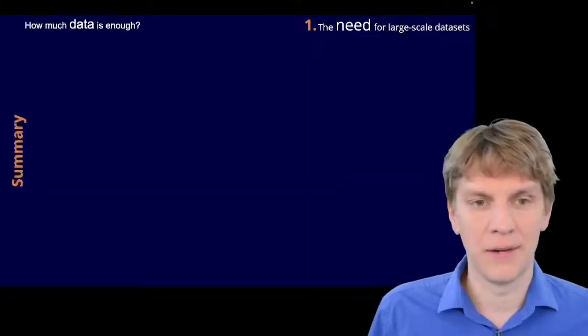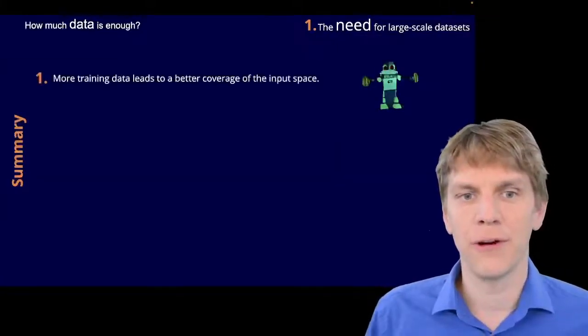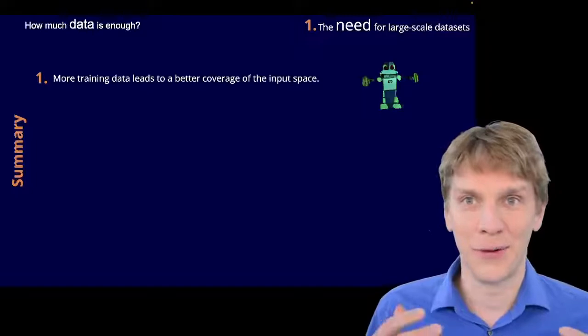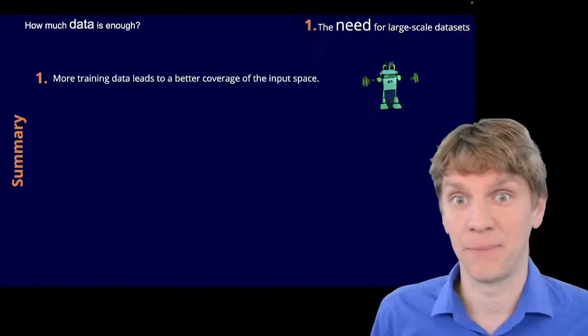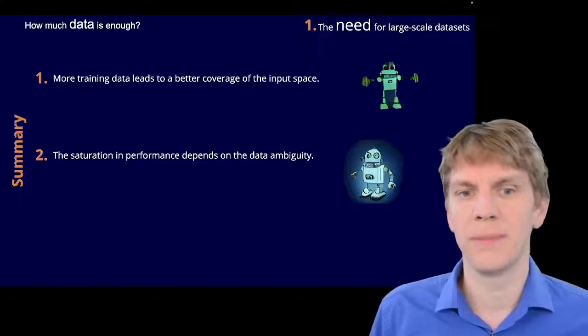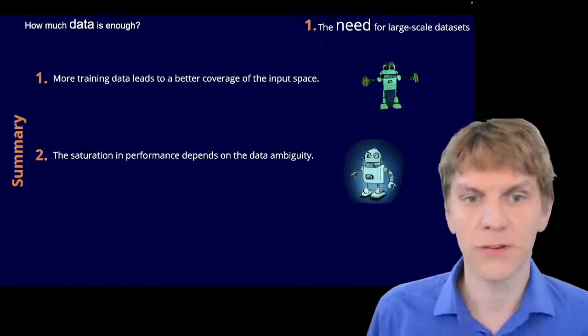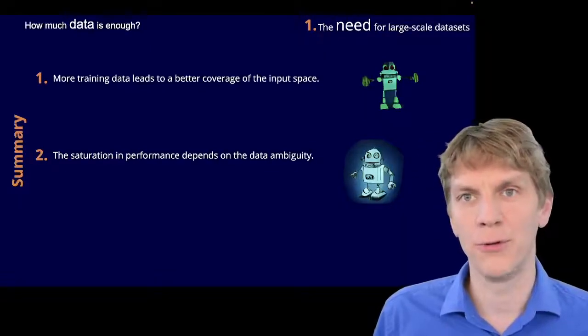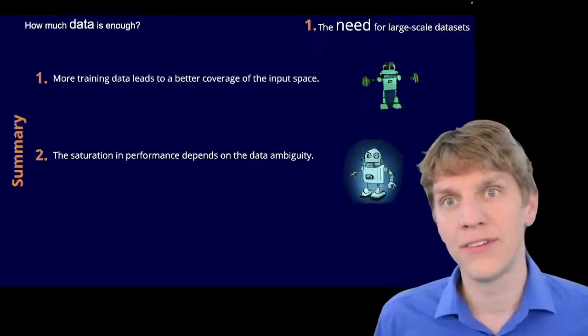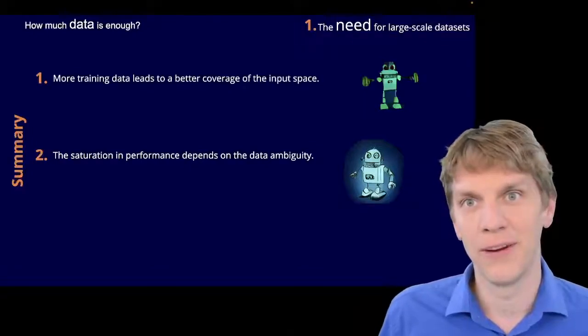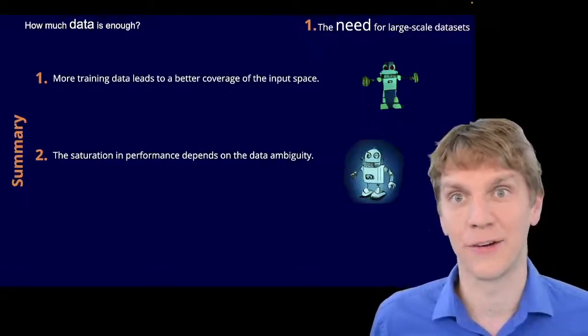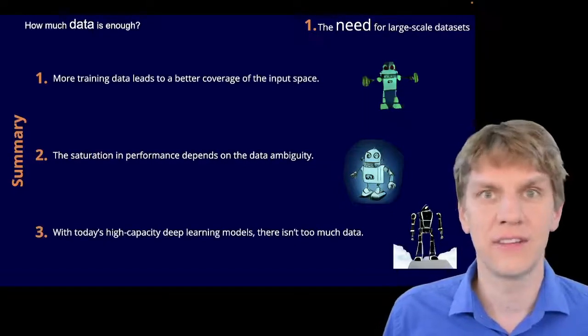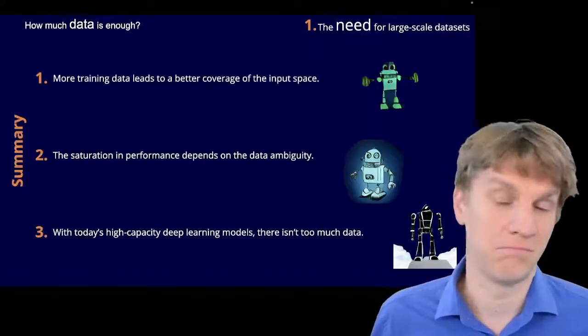All right, so let's summarize that briefly. So first of all, yes, more training data leads to better coverage of the input space, right? So we can then run better models on that. Secondly, the saturation in performance depends on the data ambiguity. So that means if we have data that is very easy and non-ambiguous, then of course we do not need a lot of training data, and the more diverse the data gets and the more ambiguous it also gets, the more data we will have to have required for a good performance. And finally, with today's high-capacity deep learning models, there isn't such a thing as too much data.